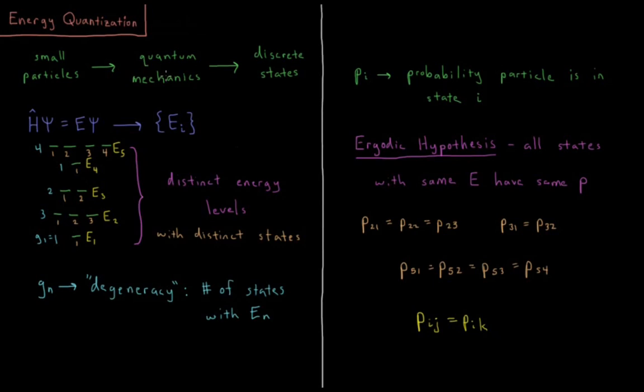To summarize, the main result of quantum mechanics is that what results are not continuously varying quantities, but there are in fact discrete states for allowed values of certain physical quantities. In quantum mechanics, what we're solving is the Schrödinger equation, which is H psi equals E psi.